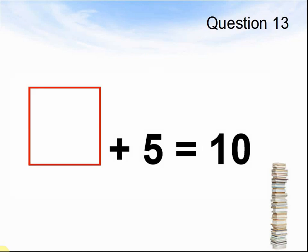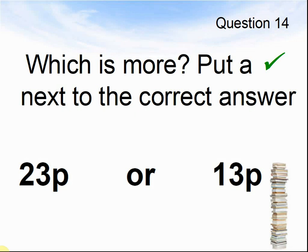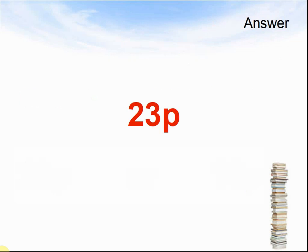Let's look at the next question. Question 13. Something plus 5 equals 10. Pause the video until you are ready for the answers. The answer was 5 plus 5 makes 10. Question 14. Which is more? Put a tick next to the correct answer or write down the bigger number. Is it 23p or 13p? Pause the video until you are ready to see the answers. Here come the answers. The answer was 23p.